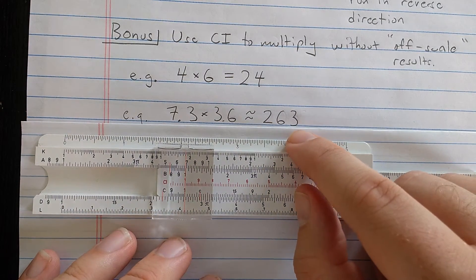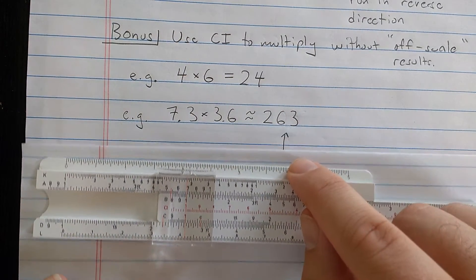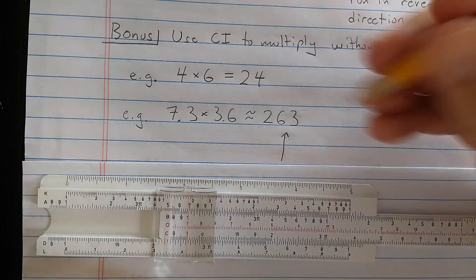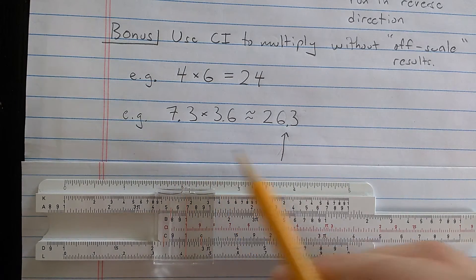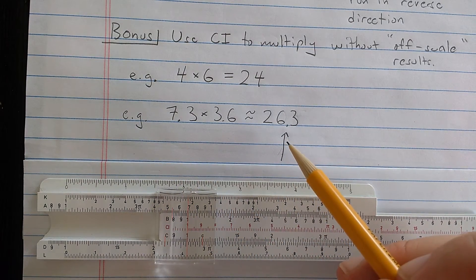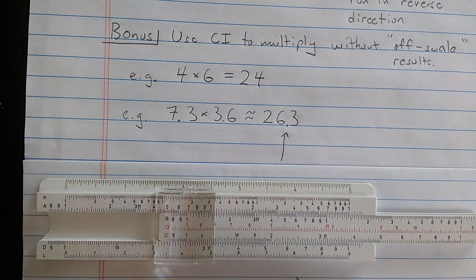But now remember, in all these calculations, you need to set the decimal. I'm going to set it there. 26.3, because again, estimating 7 times 3, 21. So the correct order of magnitude should put this at 26.3.